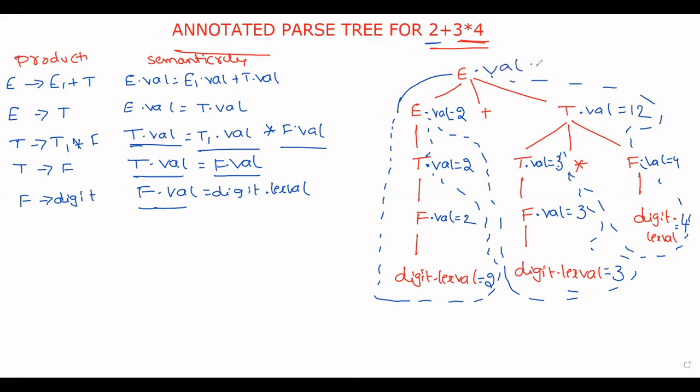Now what is E dot value? E dot value plus T dot value. 2 plus 12. 14. This is the annotated parse tree for the given expression.